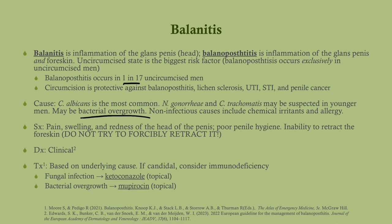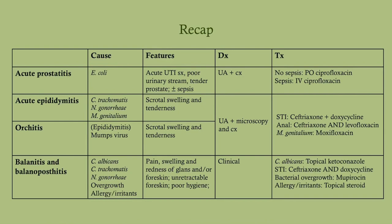Treatment is based on the underlying cause. If it is candidal — which you can identify on microscopy with a KOH prep — provide topical ketoconazole. Also consider an immunodeficiency or diabetes, since glucosuria raises the risk of fungal infection: dark, damp, and sugary conditions favor fungal growth. This is analogous to vaginal candidiasis in women. If dealing with bacterial overgrowth, as in a child with balanitis, give mupirocin, which is a topical antibiotic.